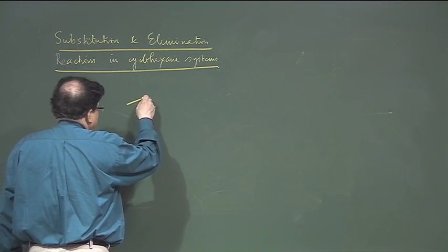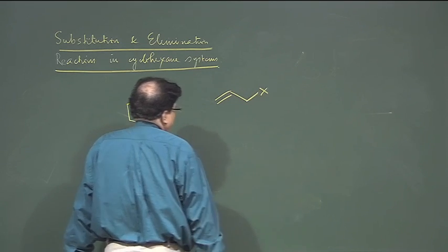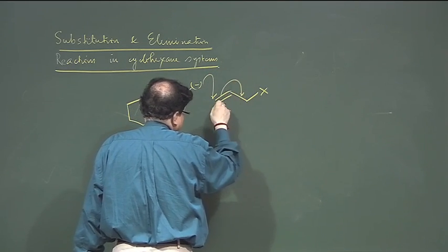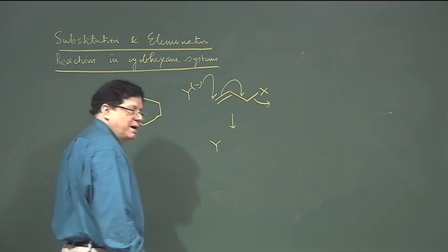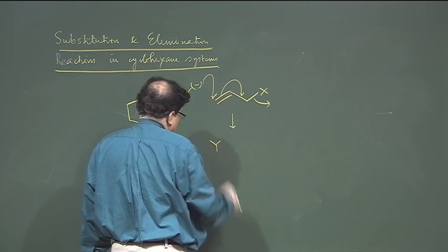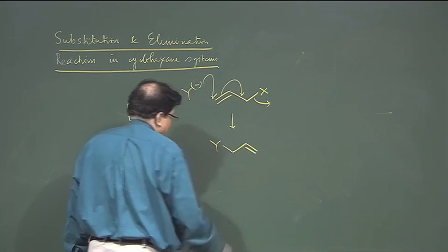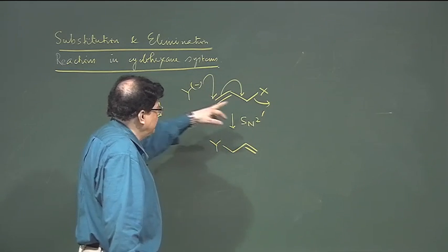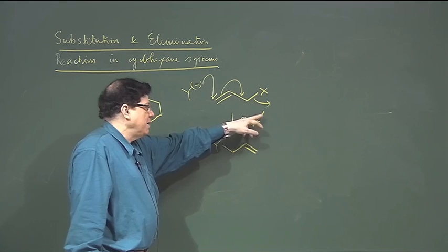There are reactions which go via allylic rearrangement — SN2 prime. If you have a leaving group and an allylic system, the nucleophile can attack the end carbon of the double bond — the gamma carbon — rather than the carbon bearing the leaving group directly. The nucleophile Y is attached via that gamma carbon, and this is called SN2 prime: it attacks another carbon, not the one containing the leaving group.